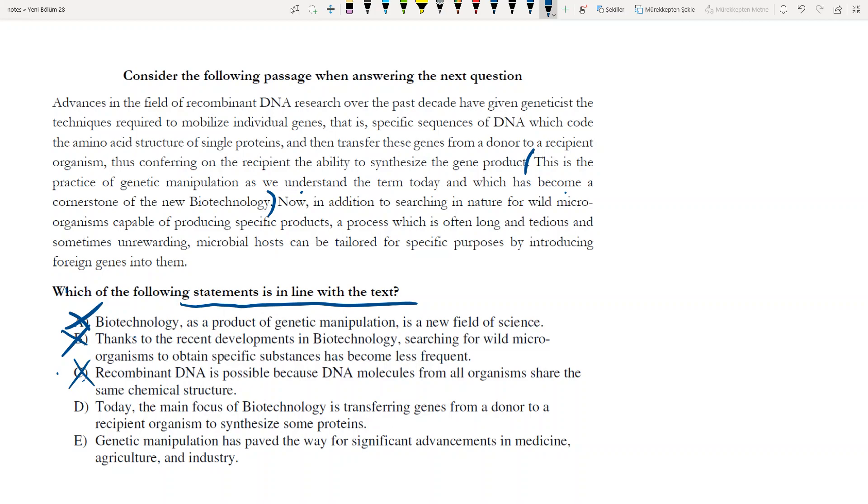Biotechnology - the cornerstone has become genetic manipulation. What is said about genetic manipulation? This DNA codes the amino acid structure of single proteins, and we transfer these genes from donor to recipient organism, thus conferring on the recipient the ability to synthesize the gene product, which is the protein. So all the text is about this.